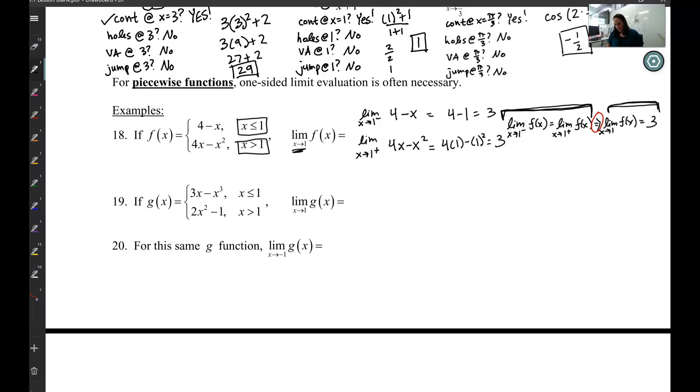Now let's look at this one. Same thing as x goes to 1, so I have to check both sides. 1 from the negative would be when it's less than 1, so 3x minus x cubed. 1 from the positive would be when it's greater than 1, so 2x squared minus 1.